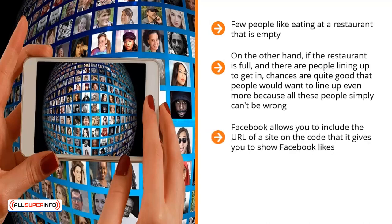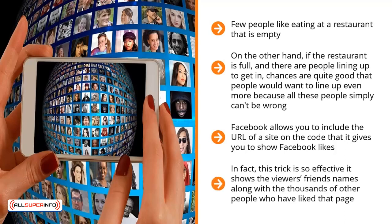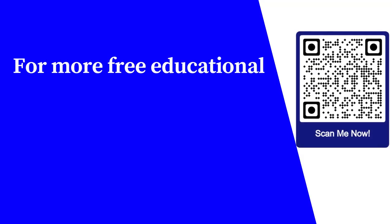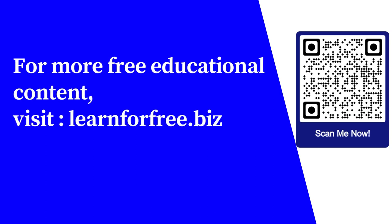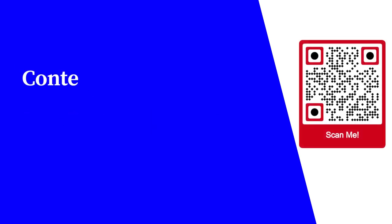Facebook allows you to include the URL of a site in the code it gives you to show Facebook likes. Embed that code onto your squeeze page to give the impression that a lot of people already like your squeeze page. In fact, this trick is so effective that it shows the viewer's friends' names along with the thousands of other people who have liked that page. Piggyback on this social proof and give the viewer the push he or she needs to sign up to your list.